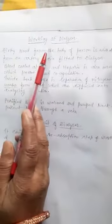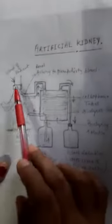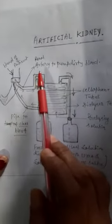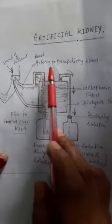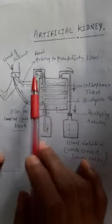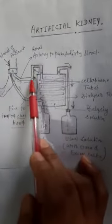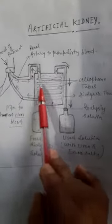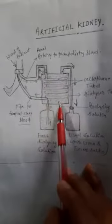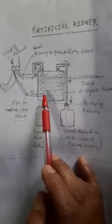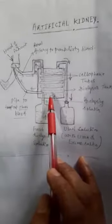Now about the working of the dialyser. The dirty blood from the body of the person is transferred into the dialysing tank with the help of an artificial pipe. The cellophane tubes start the filtration work.